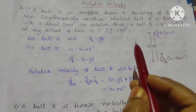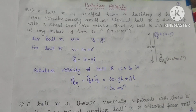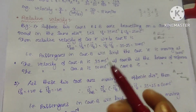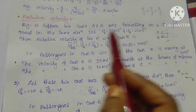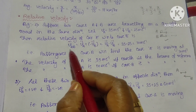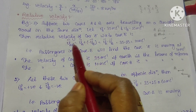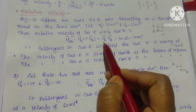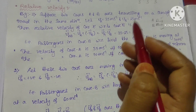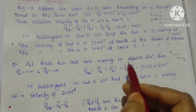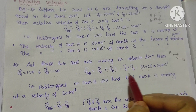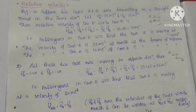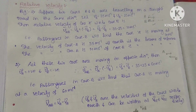Before solving some problems on relative velocity, let me recall that when two cars are moving in the same direction, the relative velocity of car A with respect to B is VAB = VA minus VB. But when the two cars are moving in the opposite direction, we simply add: VA plus VB. These are the basic formulas we need to recall to solve the questions.